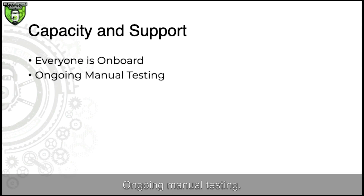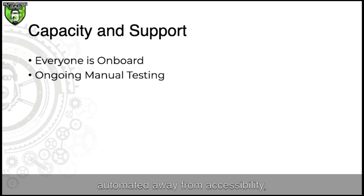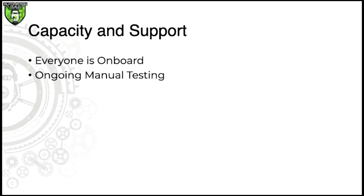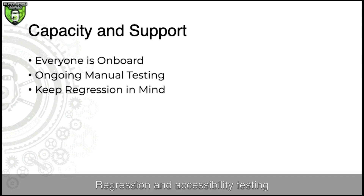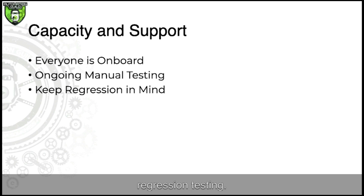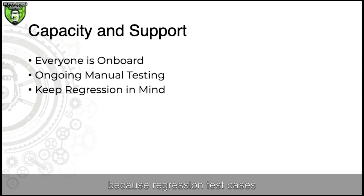Second, ongoing manual testing — manual testing cannot be automated away from accessibility. Automation and manual here are genuinely mutual. If you have the headcount for both, that's great. But if you don't, then manual is the one that needs to continue. Third, keeping regression in mind — regression and accessibility testing can be problematic, mainly when bugs are found due to audits conducted by third-party vendors. It's important to make sure bugs fixed due to audits make it into your regression testing, as it's not unusual to find the same bugs with every new audit.